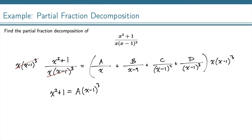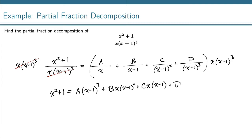For the second fraction, B over x minus 1, the x minus 1 will cancel with one of the x minus 1's here. We have an x, and then we're left with two of the x minus 1 factors, so x minus 1 squared. Similarly, for this C term, x minus 1 squared will cancel, and we'll be left with the x and just one of the x minus 1's. And finally, for this last term, the x minus 1 cubed cancels out completely, and we just have D times x.